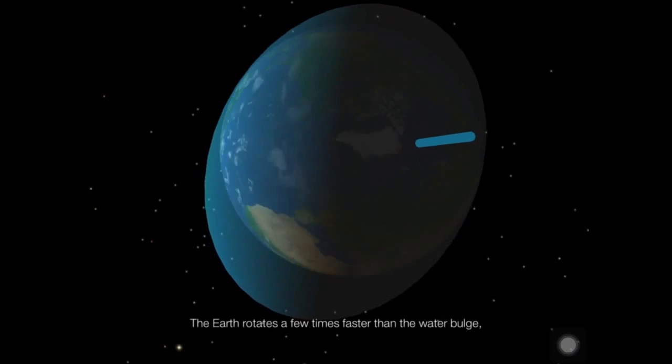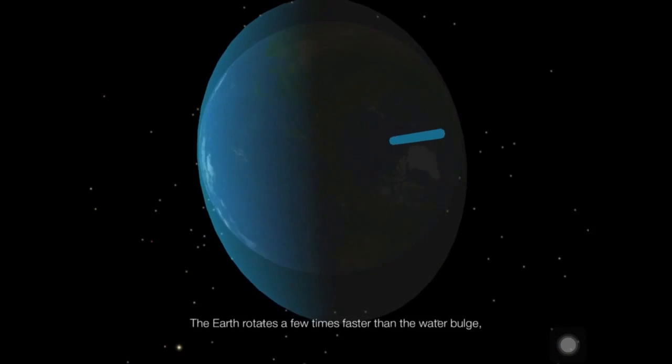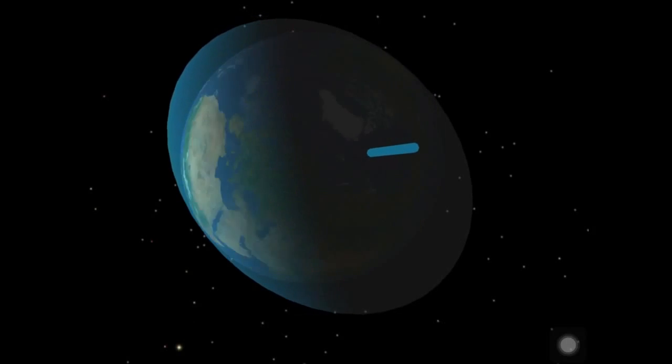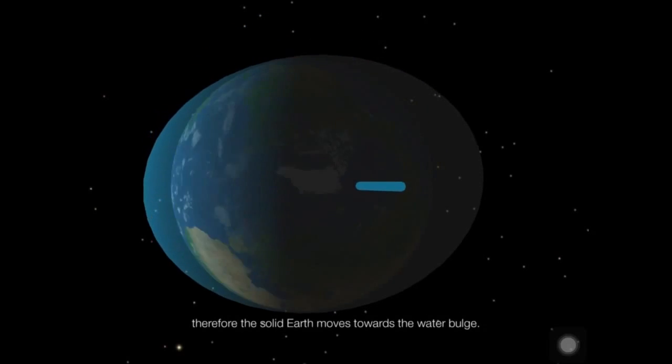The Earth rotates a few times faster than the water bulge. Therefore, the solid Earth moves toward the water bulge.